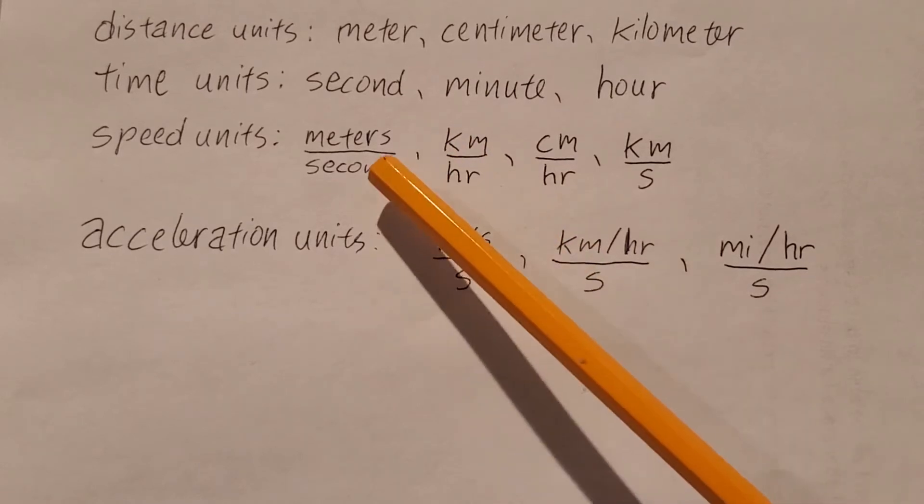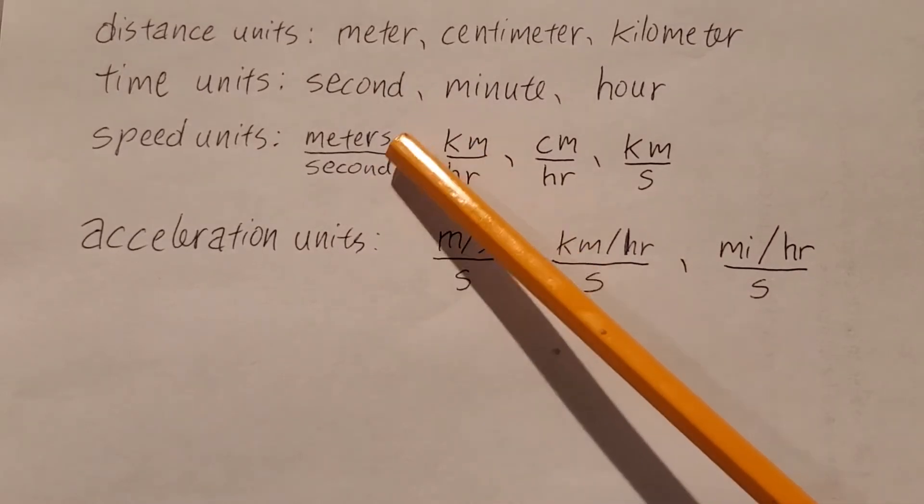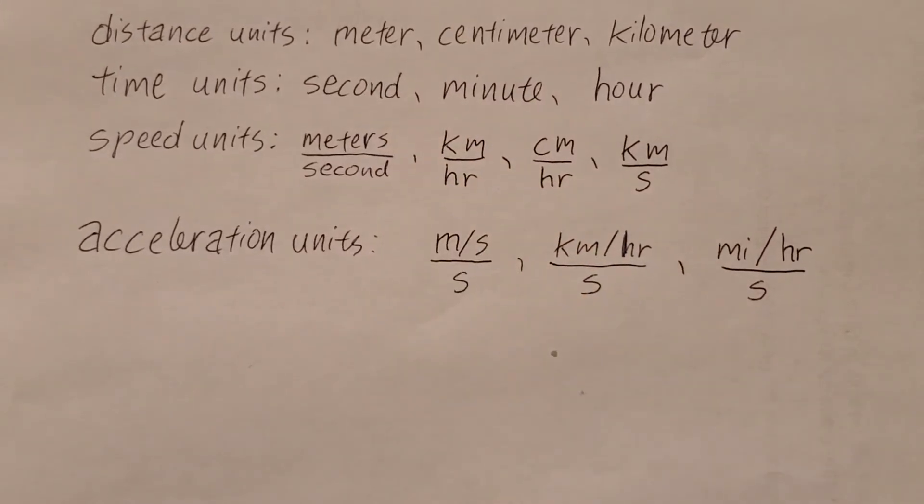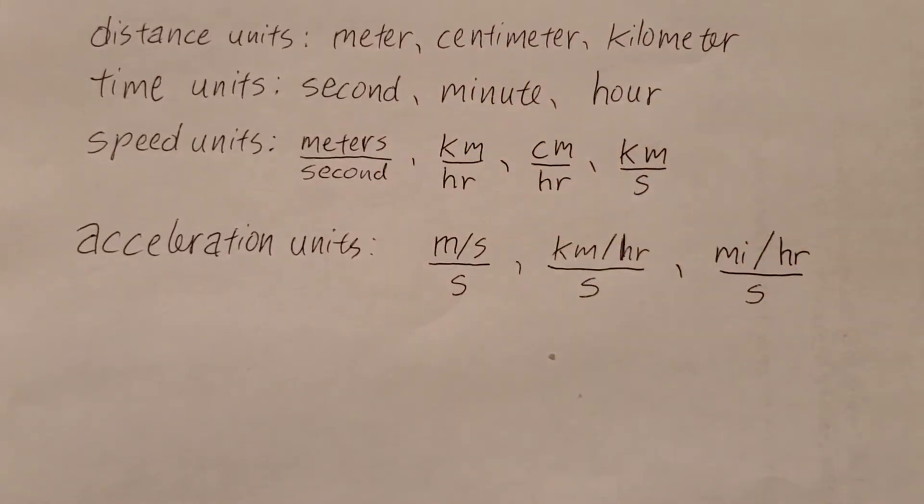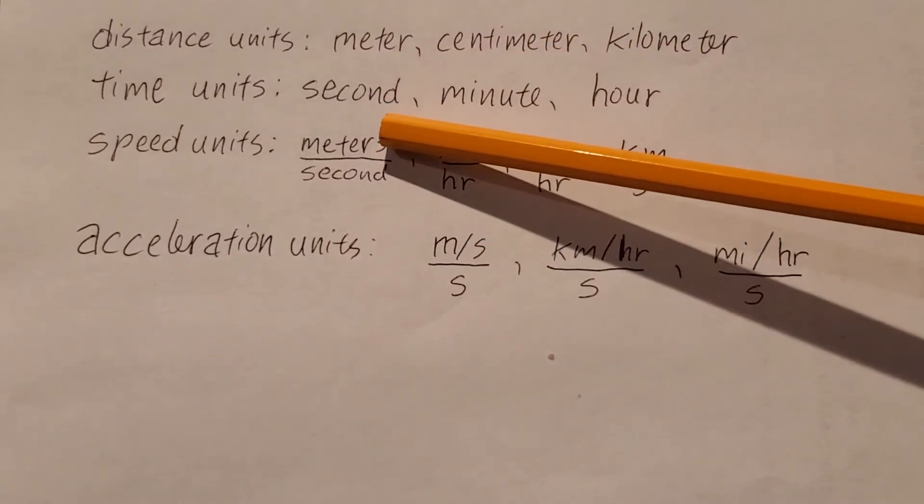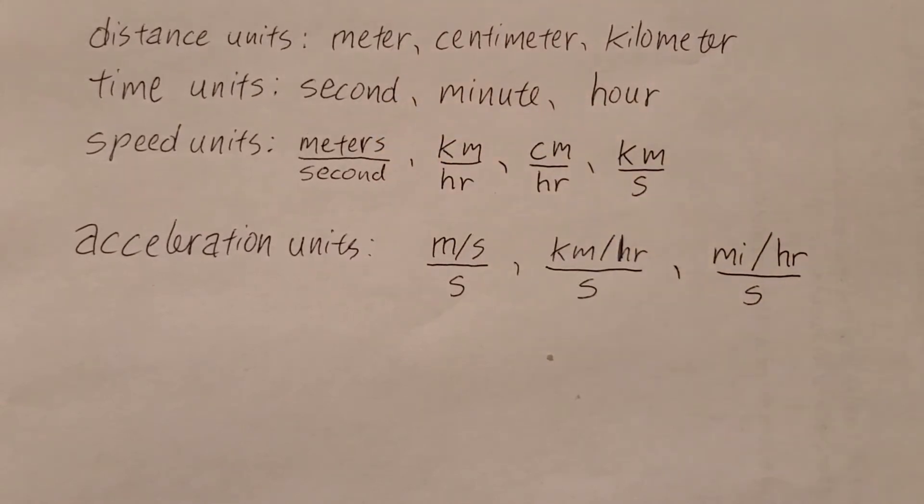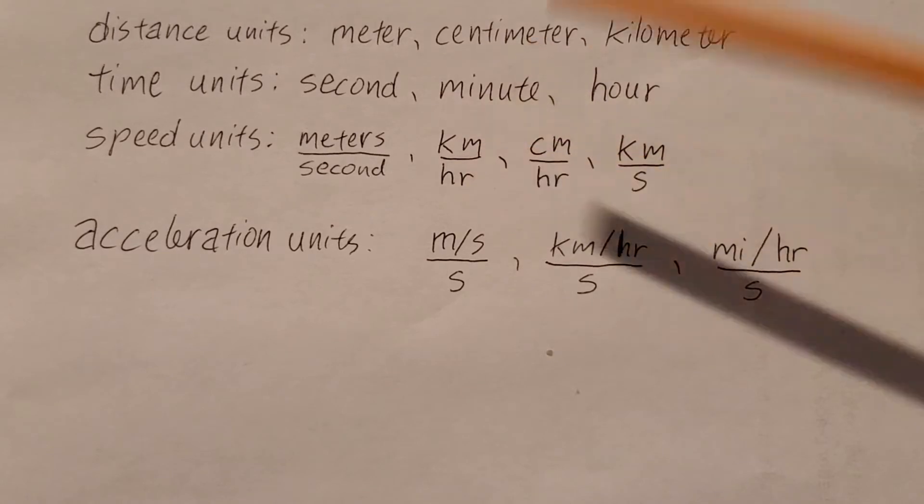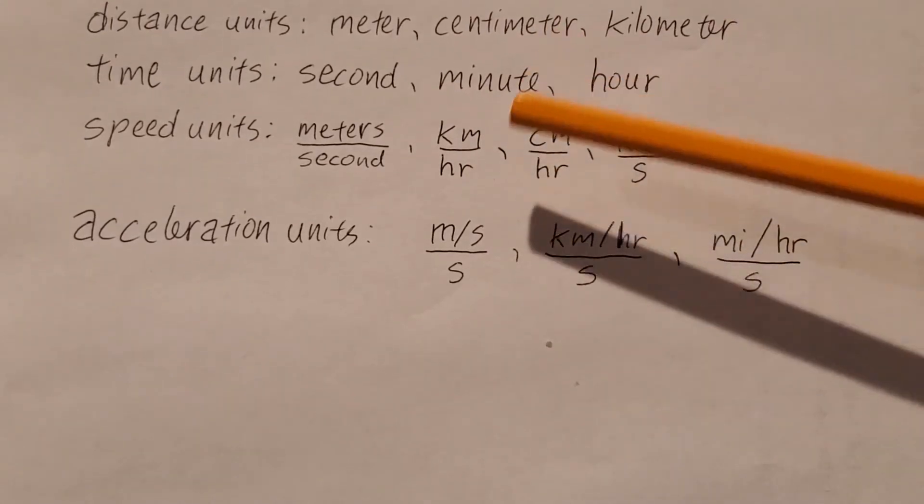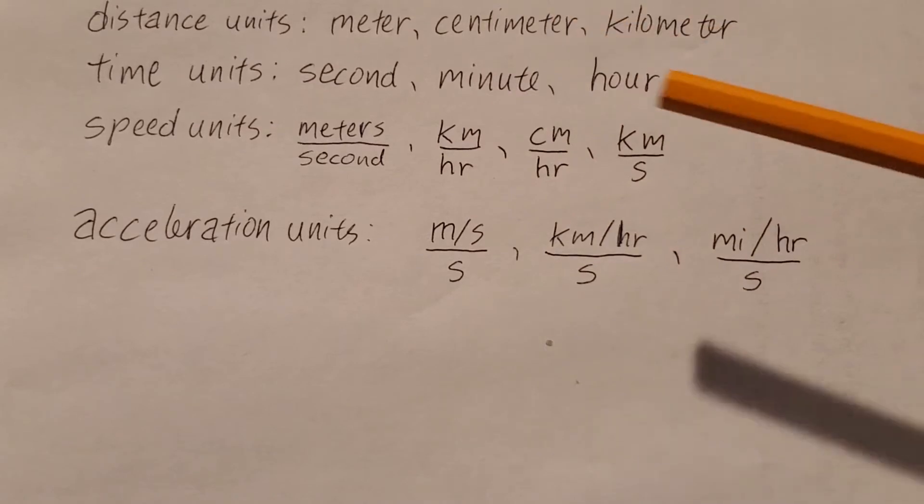Now, when we're measuring speeds, speeds are always a distance unit combined with a time unit. So in this case, we have meters per second. This is being able to move one meter for every second that goes by. This is kilometers per hour. And this is being able to move in every hour, you move one kilometer.